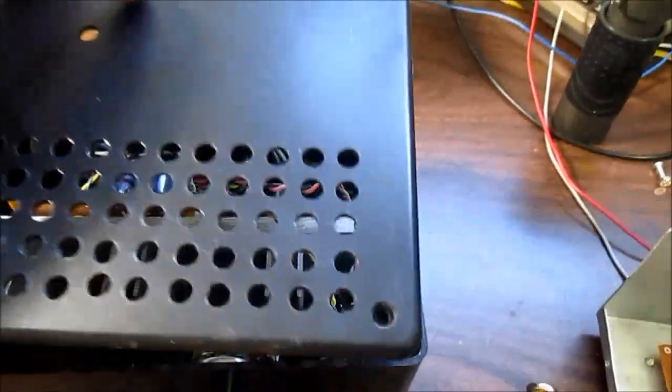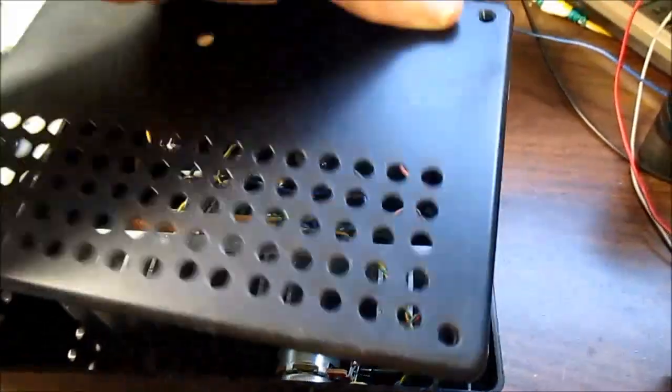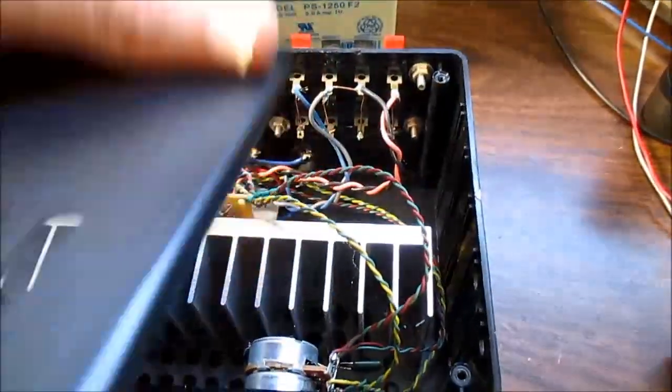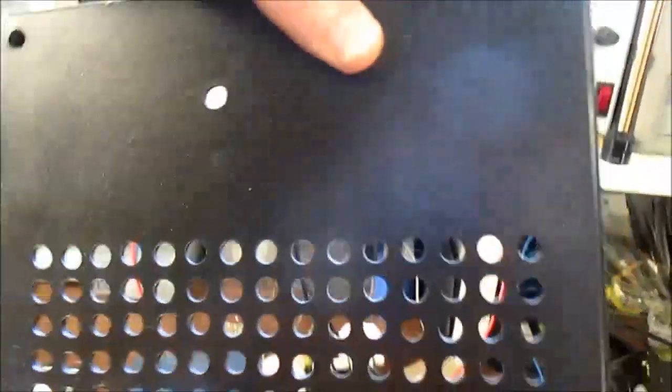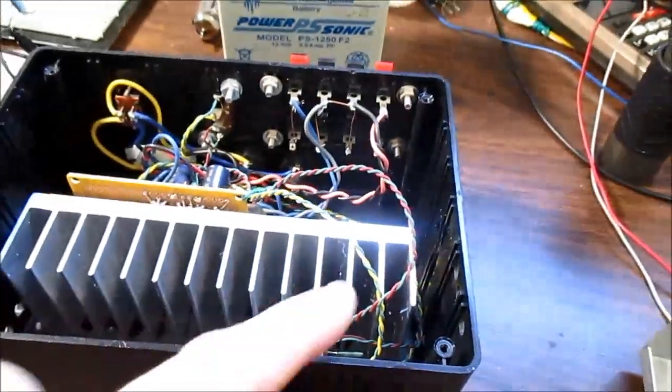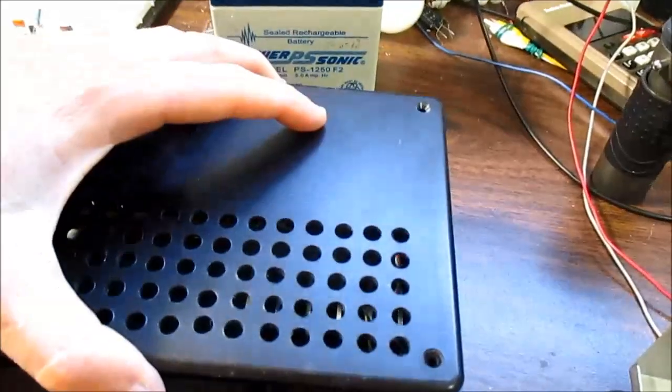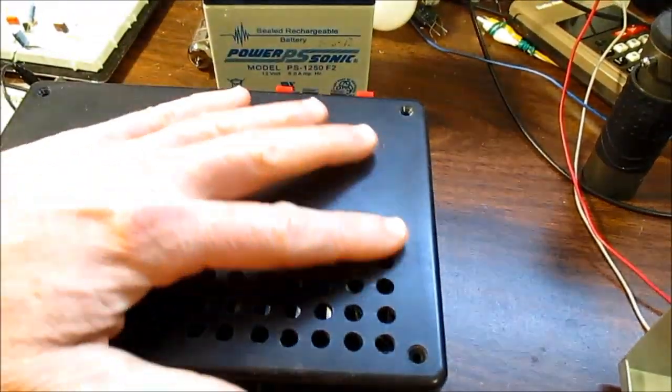I think I had this lid on backwards before. I think it was like this. It should be like this because the ventilation is over the heat sink. And speaking of ventilation, that's one of my nagging points. I see people build amplifiers. They'll put a heat sink in there. And they'll be very tiny. Or heck, they don't even have holes in the casing.